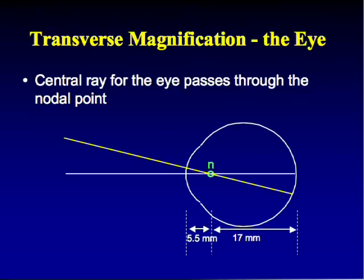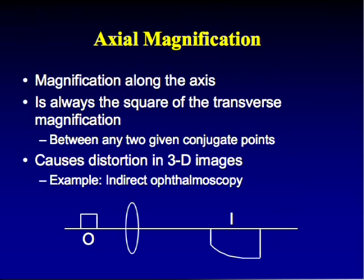In the eye, transverse magnification uses 17 millimeters — actually 15.5 — with the central ray passing through the nodal point. The problem is that people have different axial lengths, so it won't always be that value. This only applies in certain generalized cases.